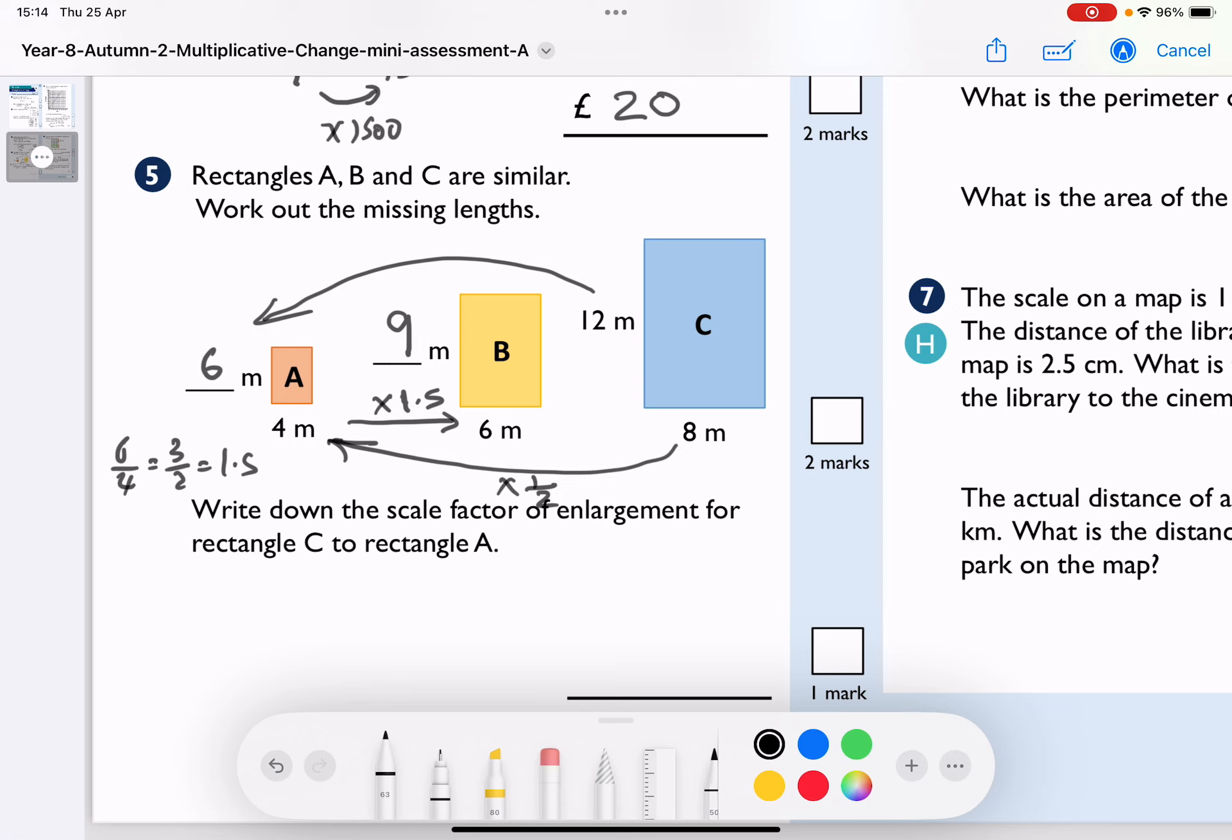Write down the scale factor of enlargement from rectangle C to rectangle A. I've already done it. It is divided by 2, but when we get smaller, we write it as a fraction, so it's times by a half.